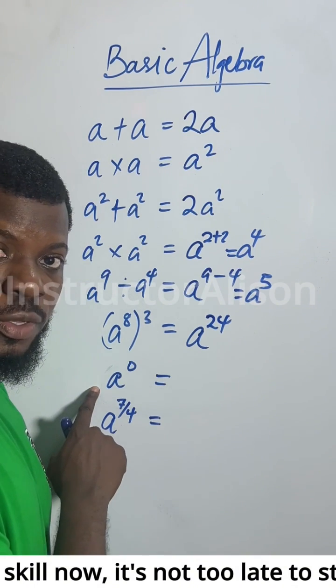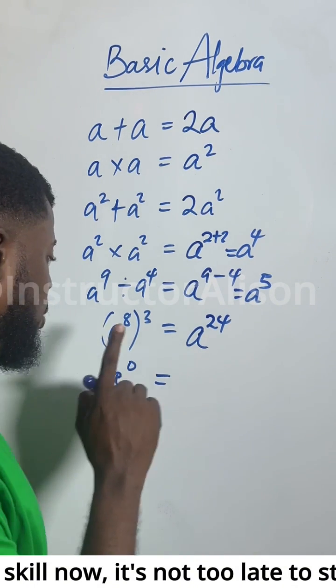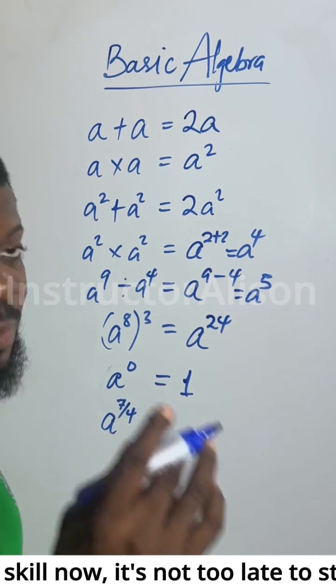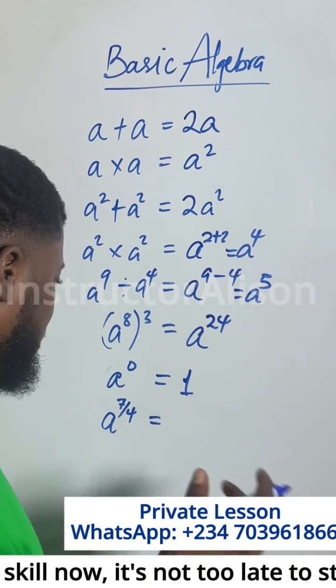This obeys zero exponent or zero index law. Anything or any number raised to the power of 0 gives you 1. That's a very good mistake anyways.